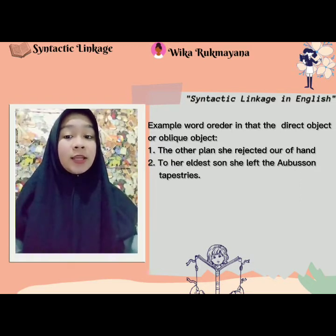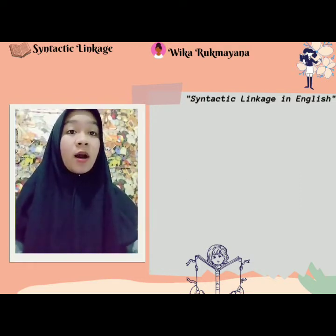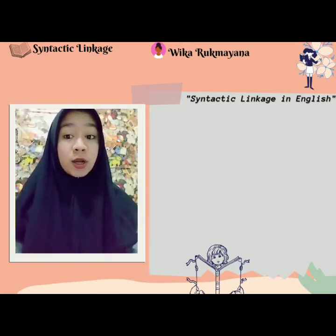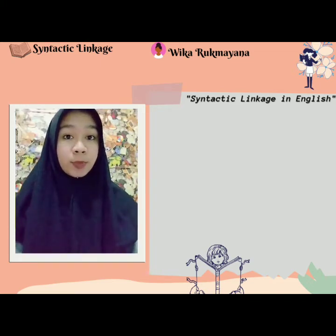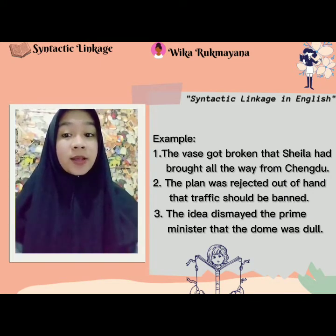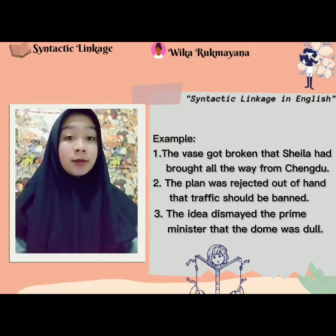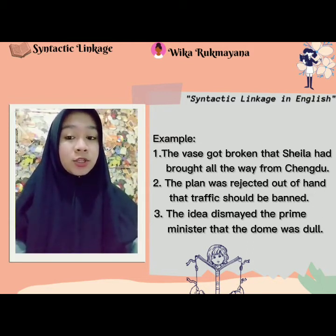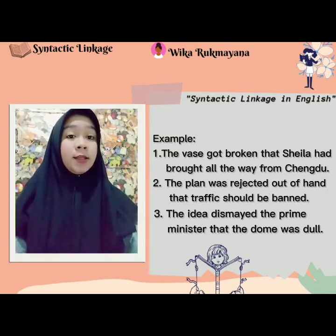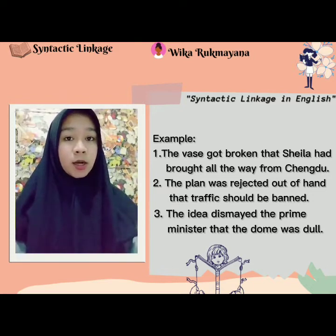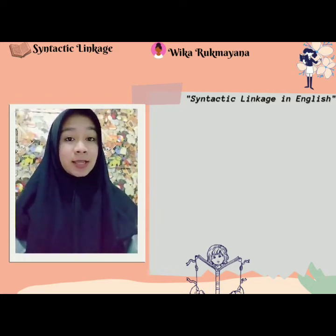And its modifiers are next to each other, but the noun phrase is in an unusual position in the clause. Here are three examples. The first is: 'The vase got broken that Sailor had brought all the way from Chicago.' The second is: 'The plan was rejected that a new track should be built.' And the last is: 'The idea displeased the prime minister, the proposal was dull.' I think that's all. Thank you.